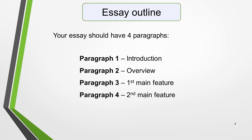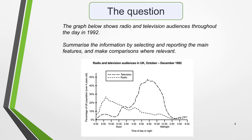Now that we have all the tools we need, we're ready to begin planning and writing our essay. Here's our practice question. The graph below shows radio and television audiences throughout the day in 1992. Summarize the information by selecting and reporting the main features and make comparisons where relevant. Write at least 150 words.